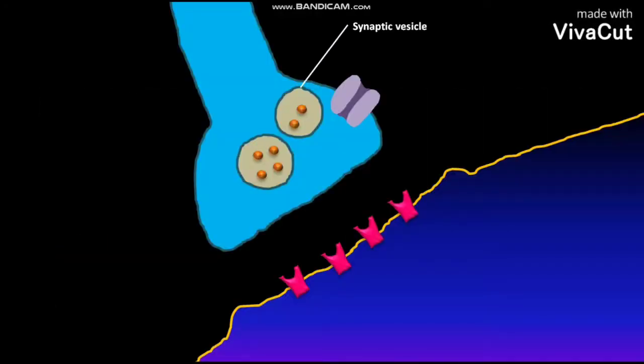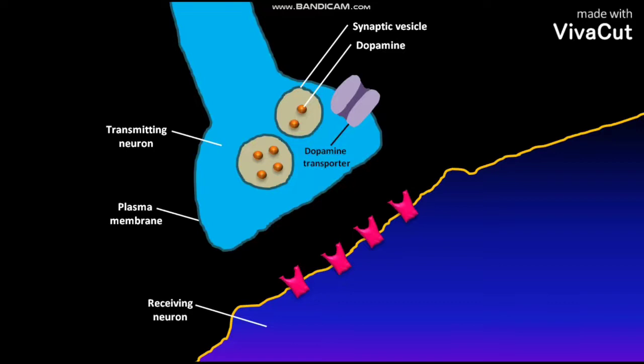The synaptic vesicle of the transmitting neuron contains neurotransmitter called dopamine. The plasma membrane of the transmitting neuron has a dopamine transporter. The receiving neuron's plasma membrane has dopamine receptors. On the arrival of an action potential,